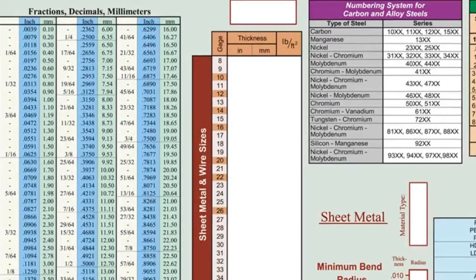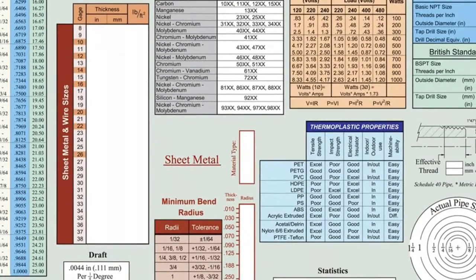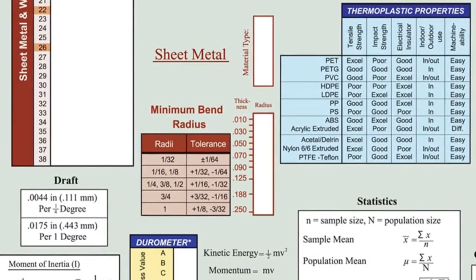To the right of that, there are two tables for sheet metal. The larger for density and thickness of various metals and gauges. The smaller table lists rules of thumb for the bend radius of different materials and thicknesses.